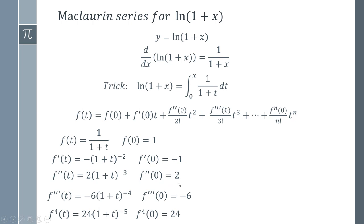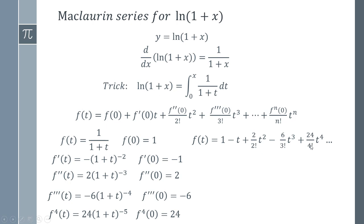We substitute each of these into the big Maclaurin formula for f(t) and we end up with this series. Looking closely: 2 over 2 factorial is 2 over 2, which is 1. 6 over 3 factorial (3×2×1=6) cancels to 1. 24 over 4 factorial also gives 1. So the Maclaurin series of 1/(1+t) is wonderfully simple: it's 1 − t + t² − t³, just alternating between plus and minus.